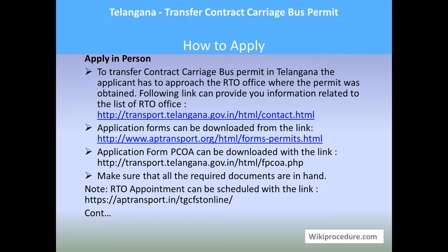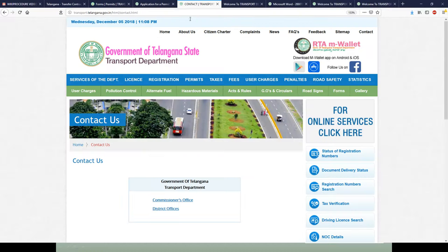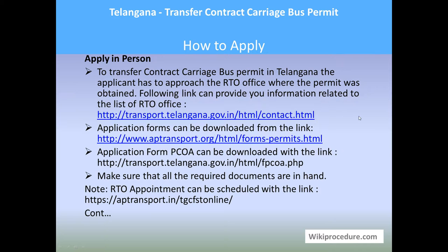Let us see how to apply in person to transfer a contract carriage bus permit in Telangana. The applicant has to go to their area RTO office. Please use the following link to locate the concerned RTO office for your area — this is the page of the Government of Telangana State Transport Department. Make sure you have downloaded and filled the application form and have all the necessary documents in order.